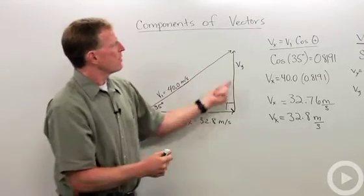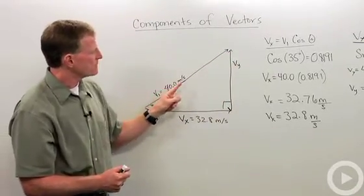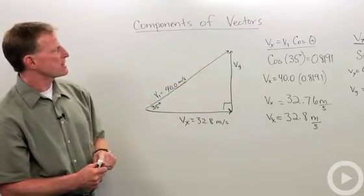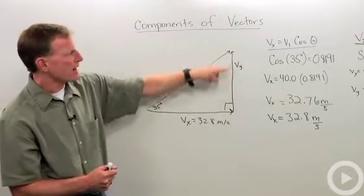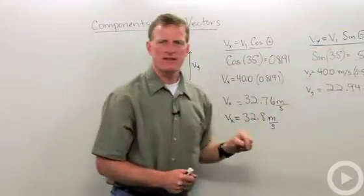Now let's look at the y vector. In this case, my y vector, when I compare it to v1, I can calculate that by saying my vector y equals my initial vector times the sine of theta.